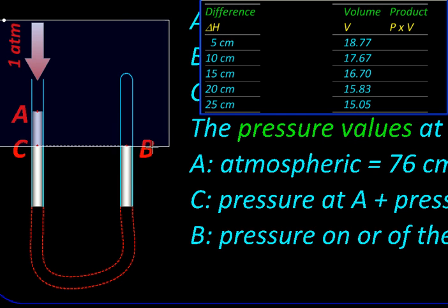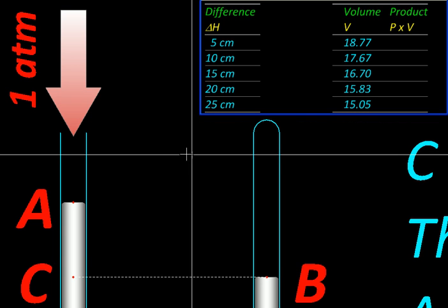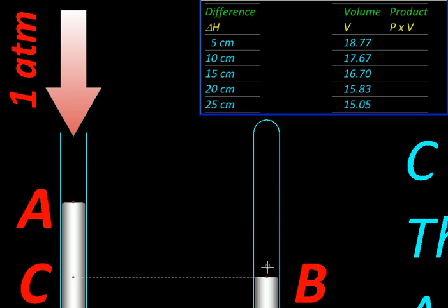B is at the top of this mercury column, so its pressure, or pressure at B, would be the pressure of the trapped gas. Point C is in the same thread of mercury and at the same level, so pressure at B and C will be equal.